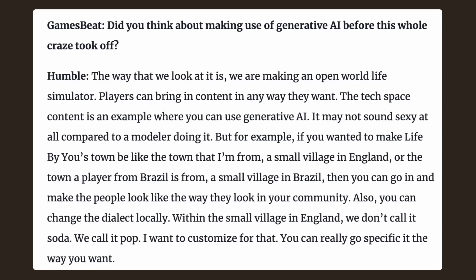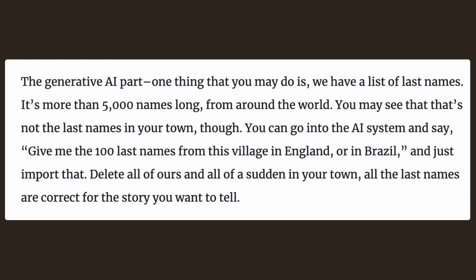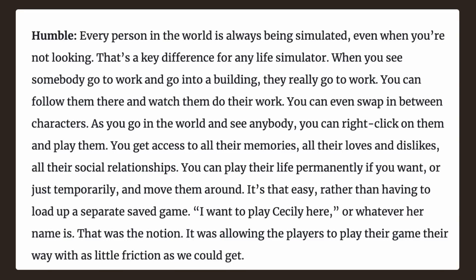We talked about this briefly in my previous video about Life by You — generative AI. In this case, generative AI adapts for conversations, but this could also apply to making and customizing your worlds. This includes changing dialect for worlds to represent whatever world you pretty much want. It also goes into names — the generative AI has a list of last names more than 5,000 names long from all around the world. You can go into the AI system and say 'give me the last 100 names from this village,' and it will just import them.